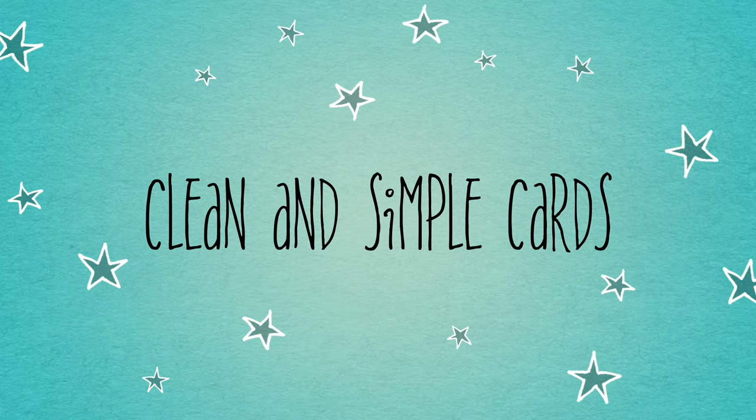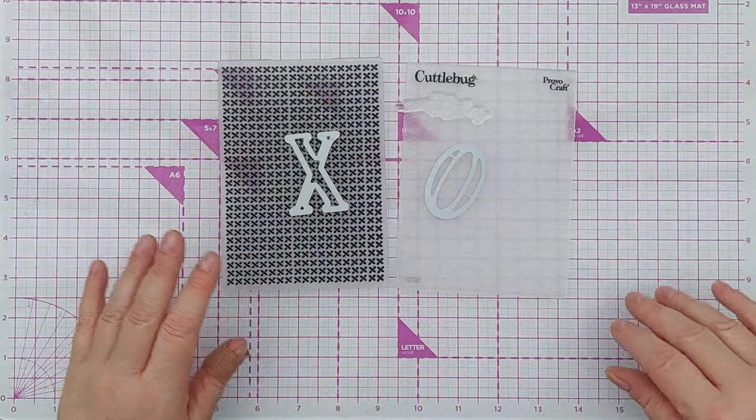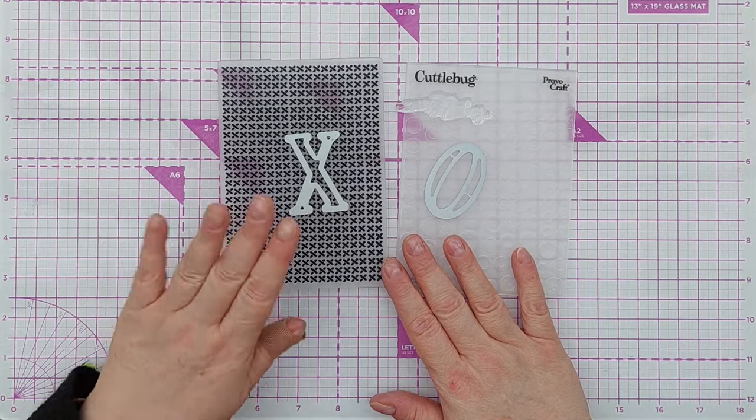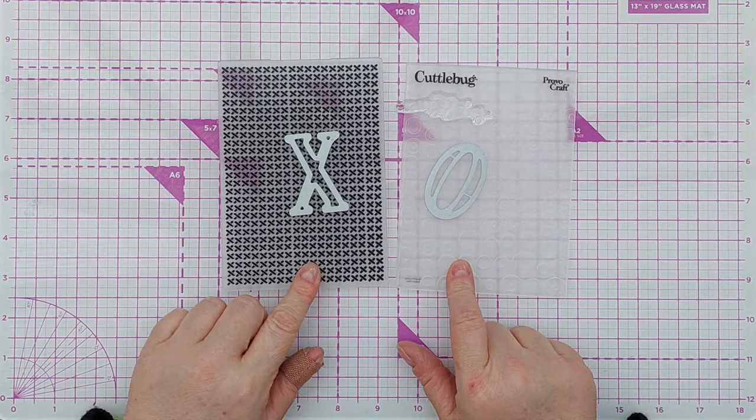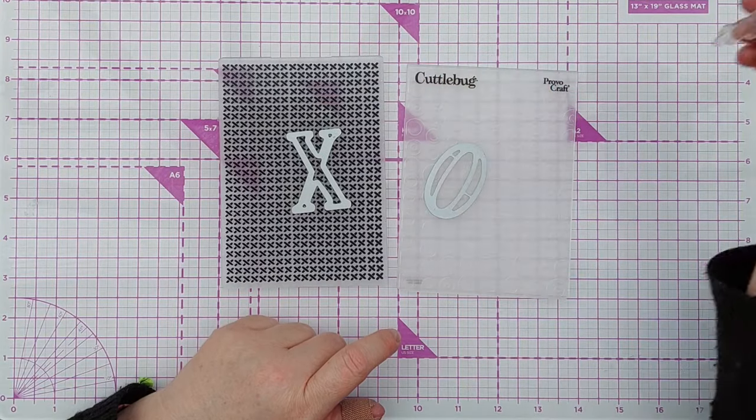Hello crafty friends, welcome to this video and to gold day in rainbow week. I'm going to make a card using just white and gold. I've got two embossing folders, two dies, and one stamp that says hugs and kisses.